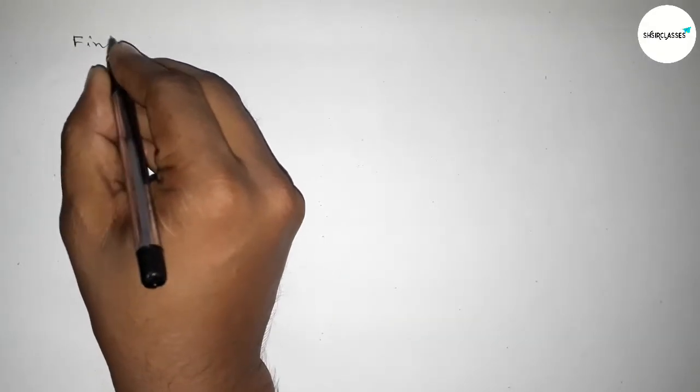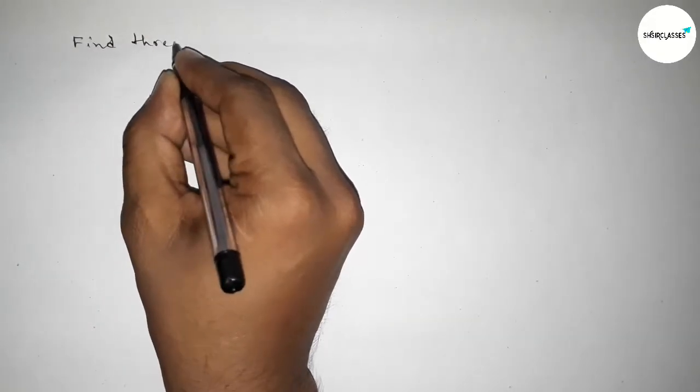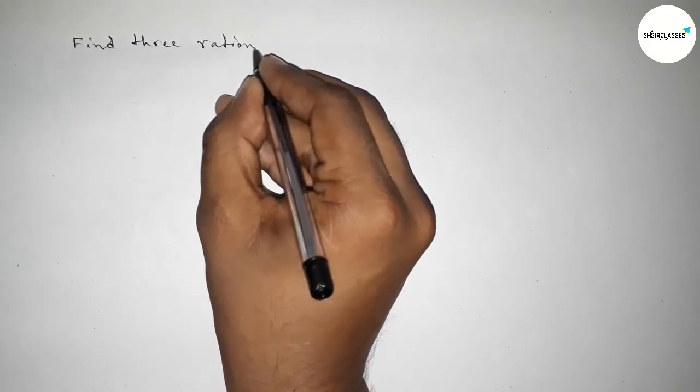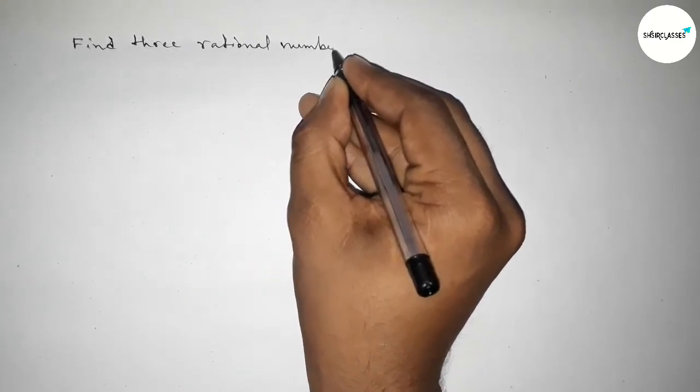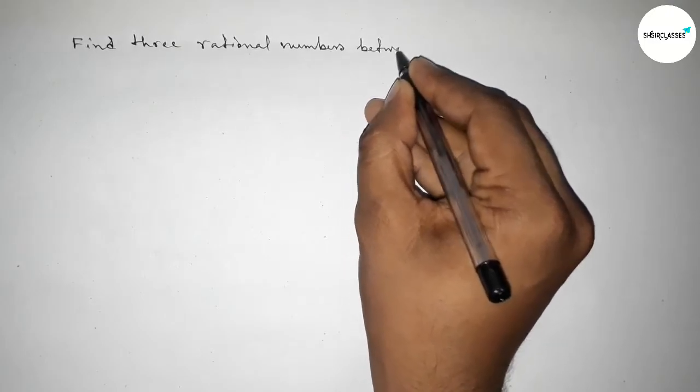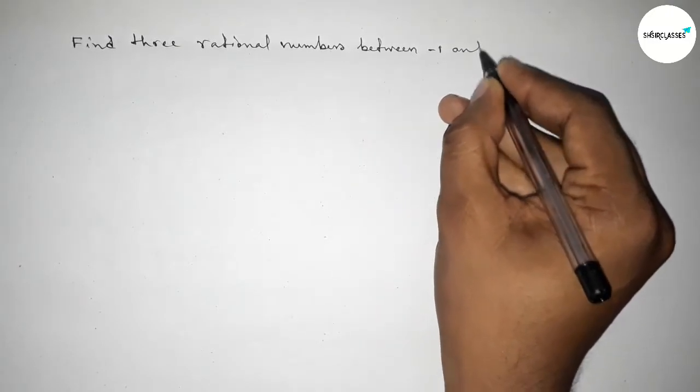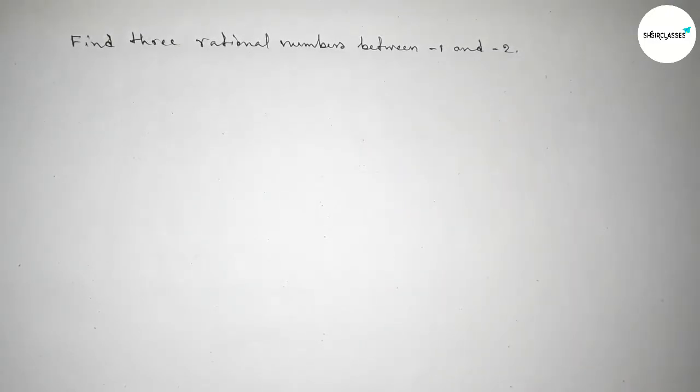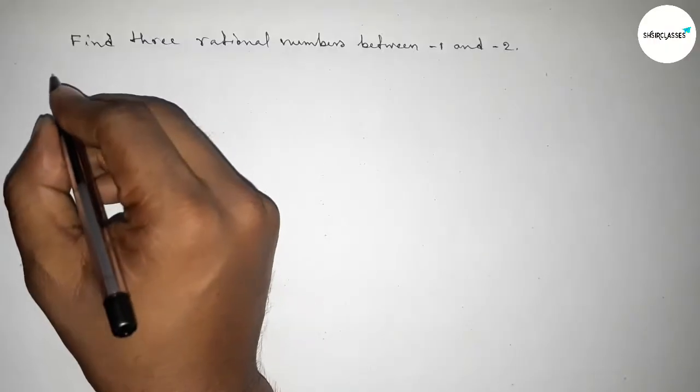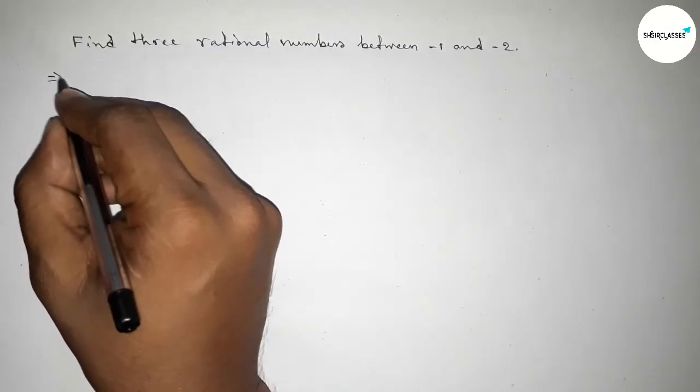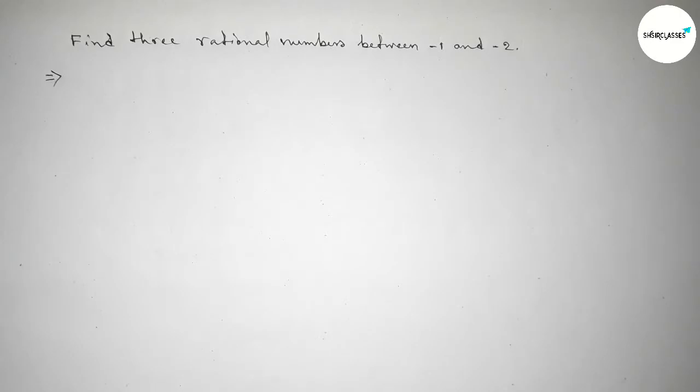Hi everyone, welcome to SI Share Classes. Today in this video we have to find out three rational numbers between minus 1 and minus 2. So let's start the video. First of all, marking here the implies sign.